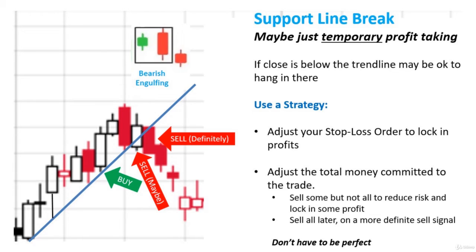So if you were to use this as a strategy around that, what you could do is adjust your stop loss order to kind of lock in profits. You can look at the lesson around stop loss orders and how to use these orders. Basically, you're going to set a stop loss at a certain point — in this case, it would be moving it above what you bought it at. So if you're wrong and it's not a false breakout and it keeps going down, you'll automatically sell and lock in some profits.